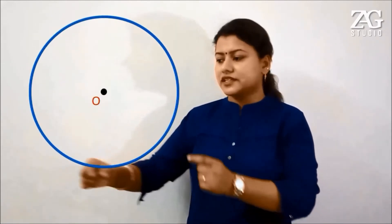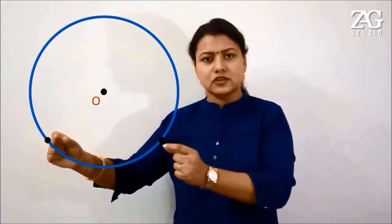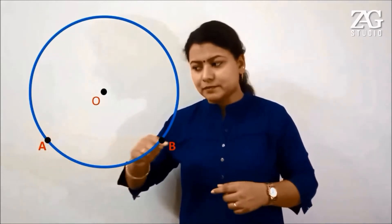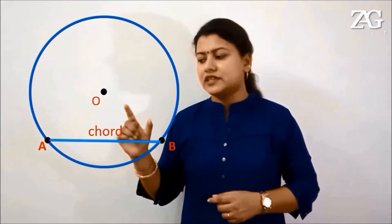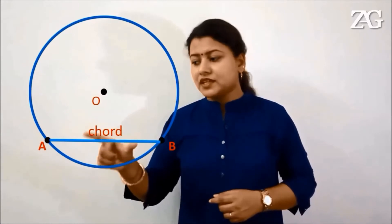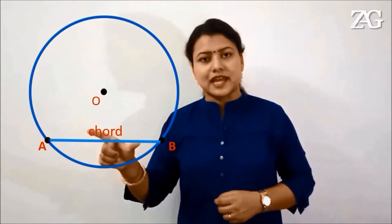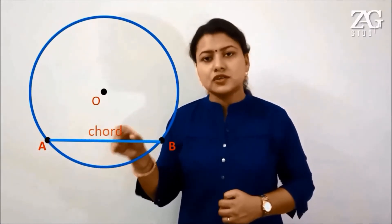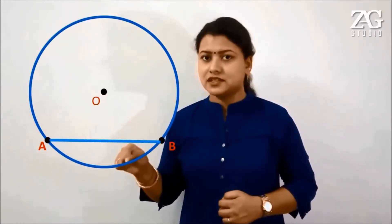If I take a circle, take two points on it, and join them with a straight line, I will get a chord. Here AB is a line segment which is the chord of that circle.